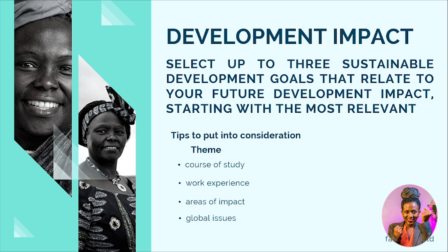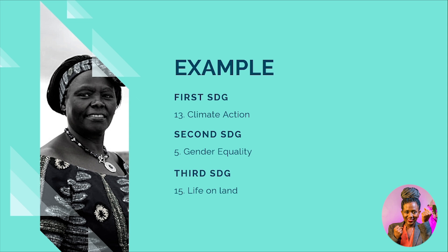In relation to Wangari Maathai, her first SDG would be Climate Action — she initiated the Green Belt Movement. Her second would be Gender Equality, and her third would be Life on Land, as she is known as a defender of the earth.